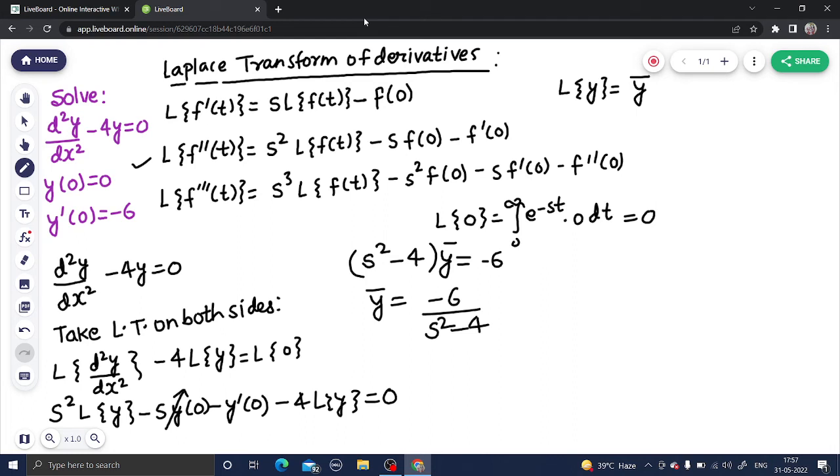From here, y bar which is Laplace of y is -6 divided by s² - 4. In this step, the second most important step is to take inverse Laplace transform on both sides. Once you take inverse Laplace transform, Laplace inverse of Laplace of y gives you y only. This is Laplace inverse of 1/(s² - a²), which is (1/a) sinh(at).